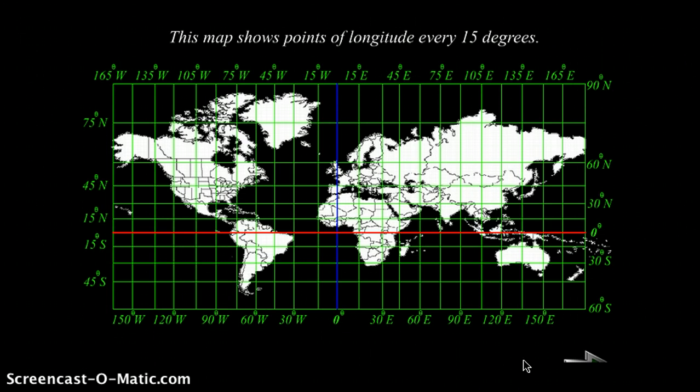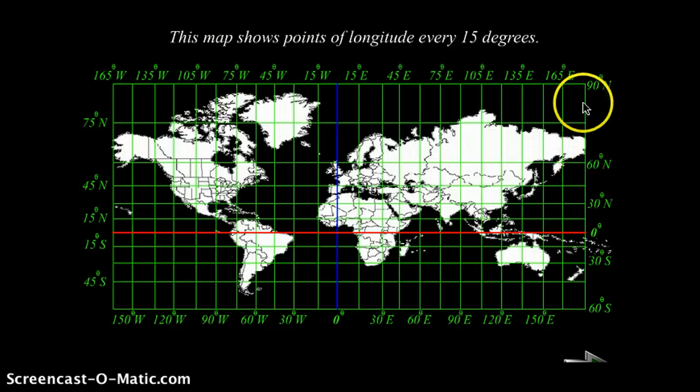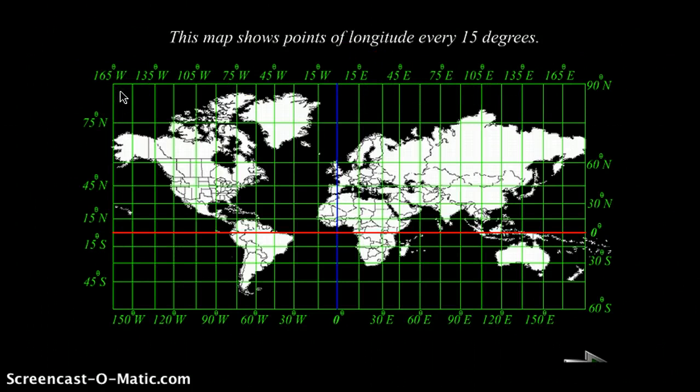This map shows points of longitude every 15 degrees. So this is the scale, 15 degrees. This way: 15, 45, 75. Actually, this is 15, then this would be 30, 45. So it shows you every 15 degrees.